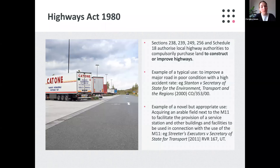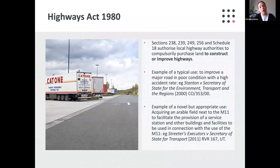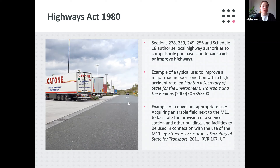The second example is a more novel use of CPO powers under the Highways Act. Here there was a CPO concerning a field bought next to the M11 with a view to facilitating the provision of a service station and other buildings. At a later point in time, planning permission was granted for the building of a hotel on that site as well, to be used in connection with the M11. The challenge was whether the hotel could be deemed a development falling within the relevant purpose the CPO had been made for. The Upper Tribunal said that it could, because there was a direct link between the improvement of the highway.